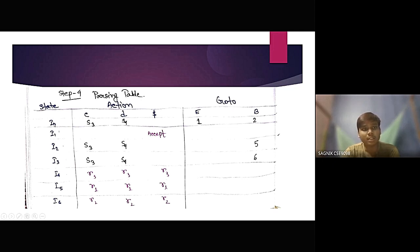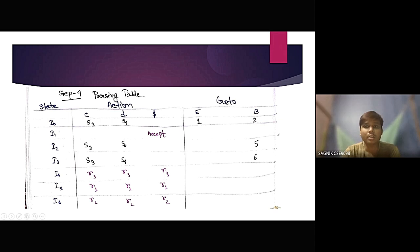The states are I0, I1, I2, I3, I4, I5, and I6. The action part contains the terminal symbols C, D, and dollar — dollar is always there. The go-to part contains the variables E and B.